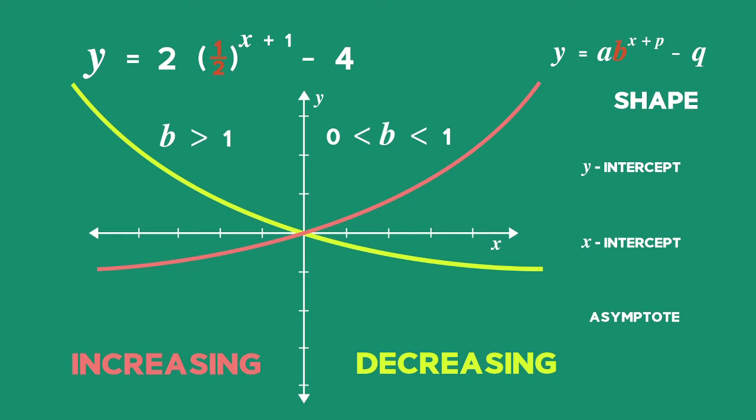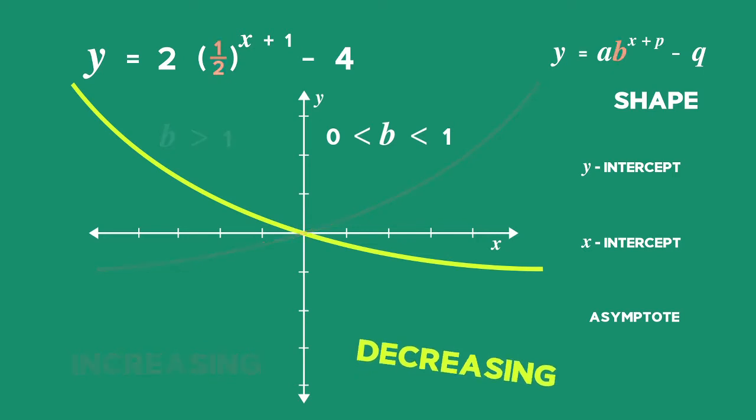Since b, the base, is a fraction between 0 and 1, the graph will be decreasing.